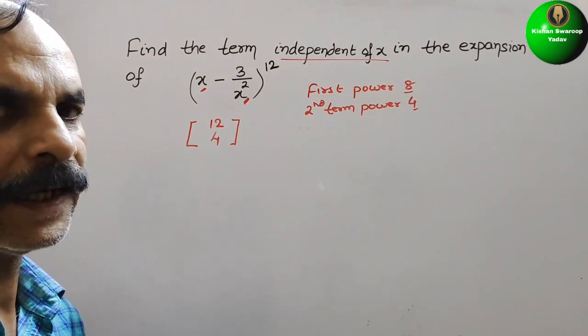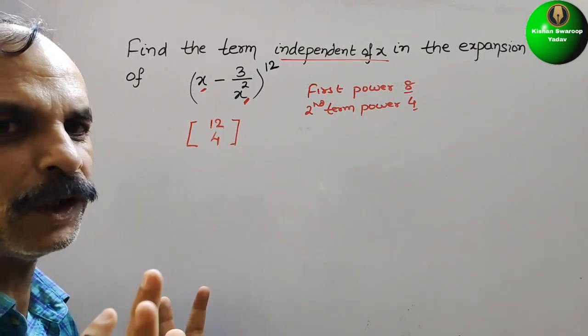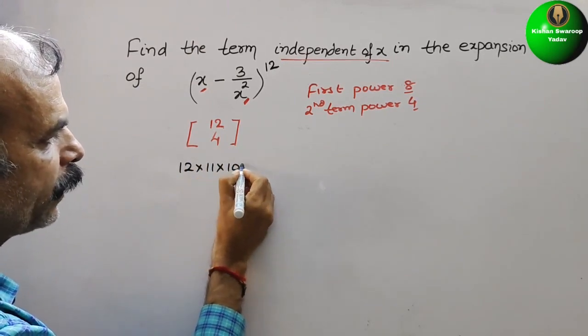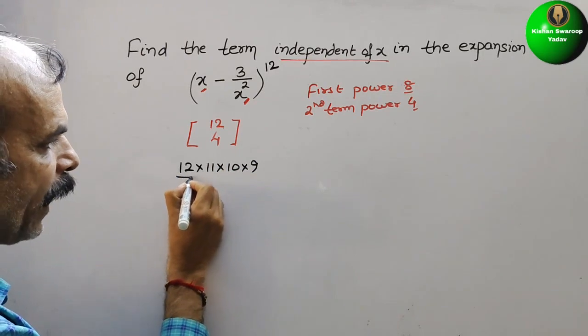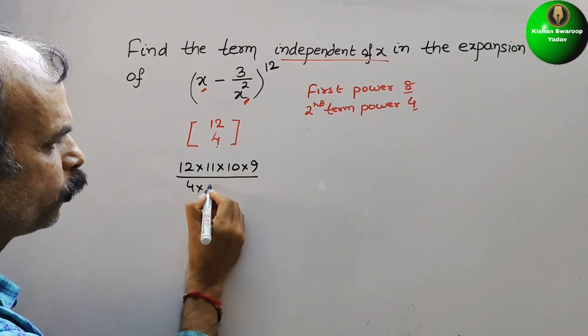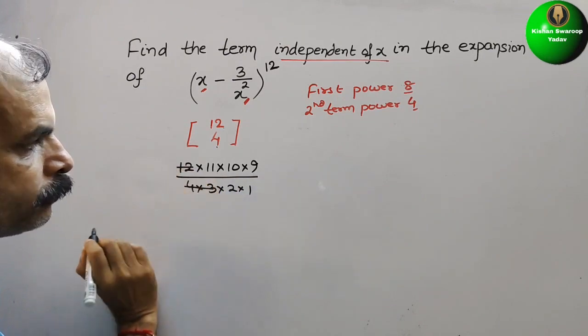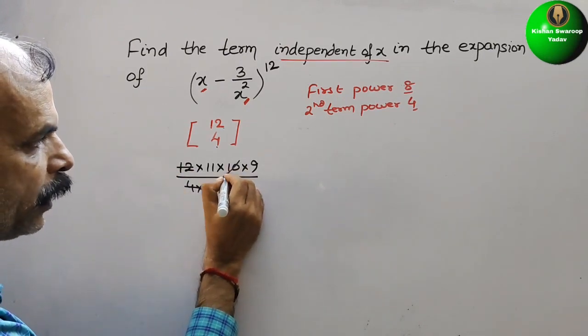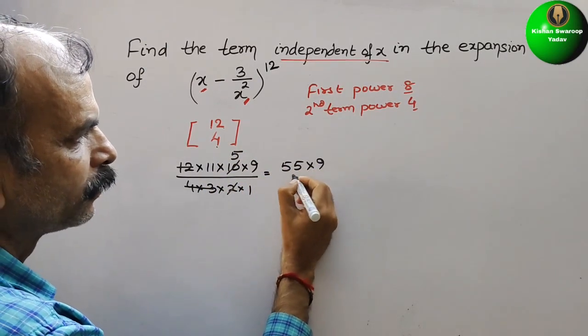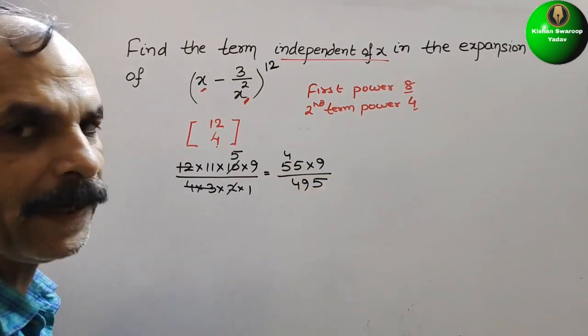So for solving this what we will get? Here 12 factorial we have to write up to the 4 numbers only. So that means it will be 12 into 11 into 10 into 9. And at the down we have to divide it by 4 factorial, that is nothing but 4 into 3 into 2 into 1. Now 4 into 3 is 12, 2 here it will go for 5 times. So now it will be 55 into 9. That is equal to we can say is 45, 4 carry 49, so 495.